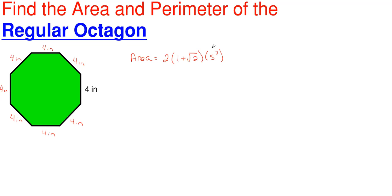Before I boil this down into something a little bit easier, let me just take a moment and say what s is. S is going to be the side of your octagon — just one of your sides. And since all the sides are equal, just pick one of them. Since all my sides are equal in length, my s here will be equal to 4 inches.